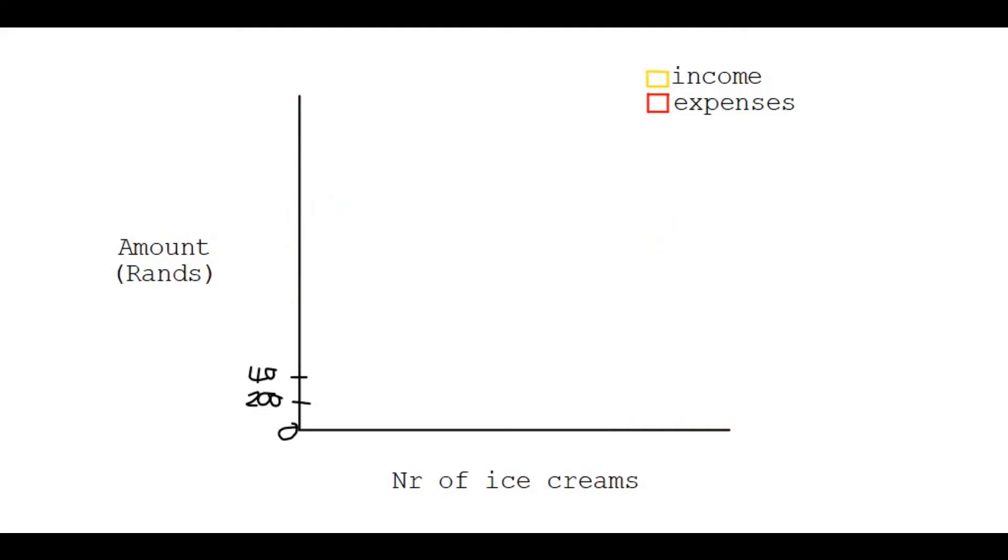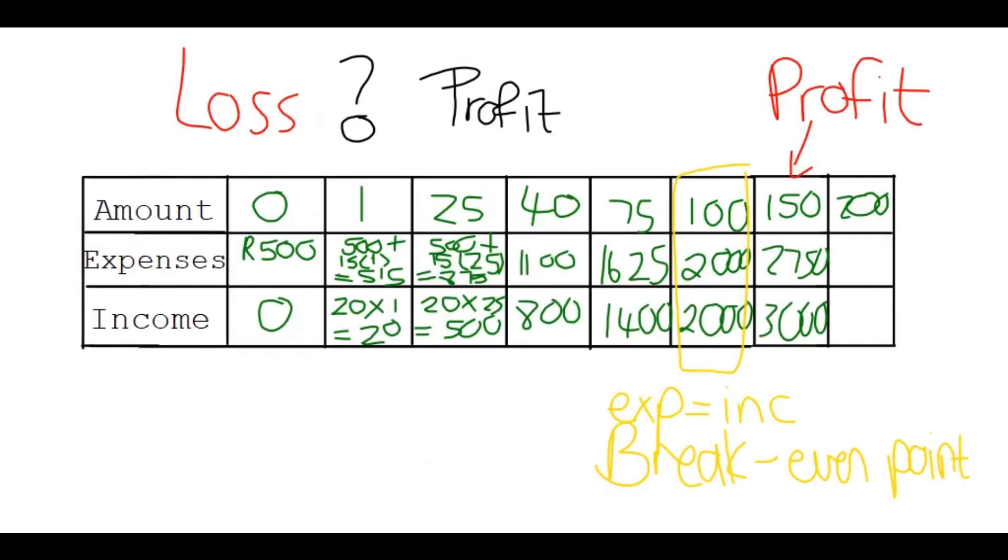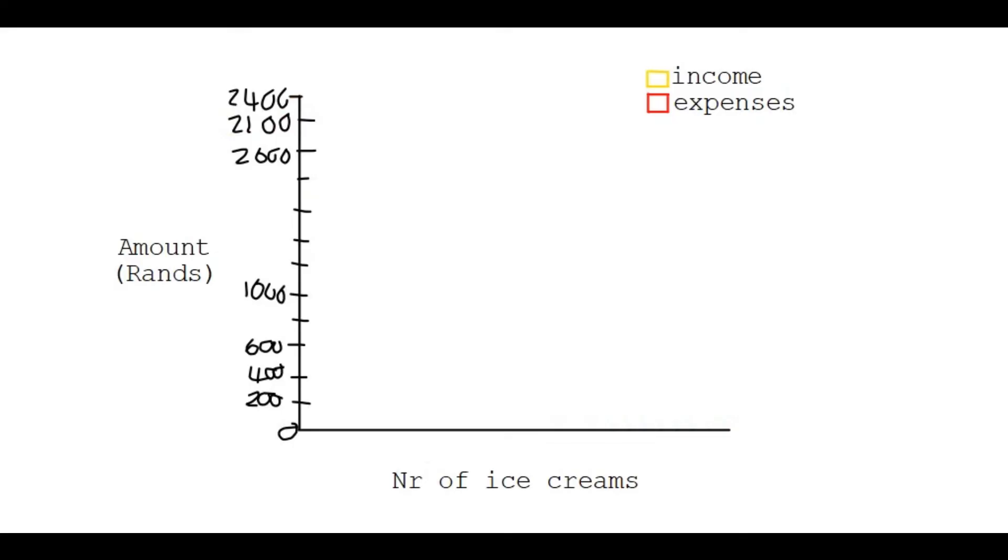So that's 200, 400, 600, 800, 1000, 1200, 1400, 1600, 1800, 2000, 2200, and let's go up until maybe 2400. So more or less, that's the kind of scale you'd be having. And then, for the number of ice creams, you could count in 10s for the scale, and you need to go more than 100. So, 10, 20, 30, 40, 50, 60, 70, 80, 90, 100, 110, 120, 130, 140, and maybe 150. So, more or less, this is a scale.